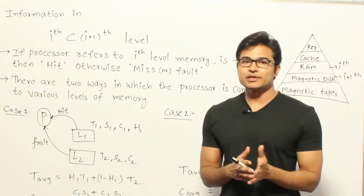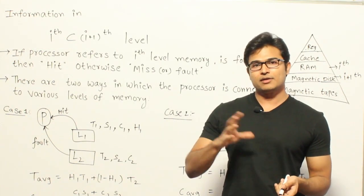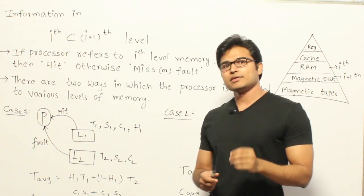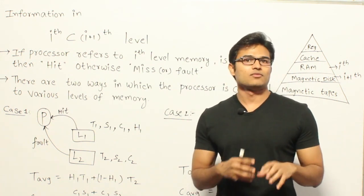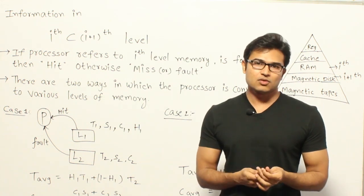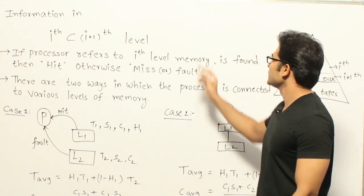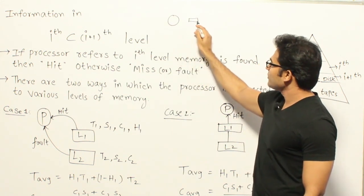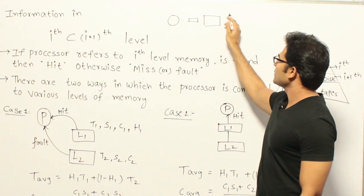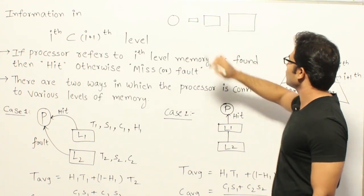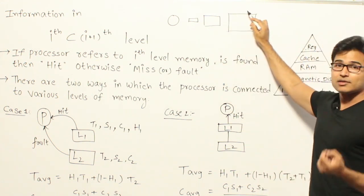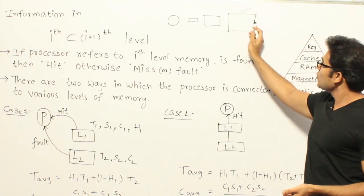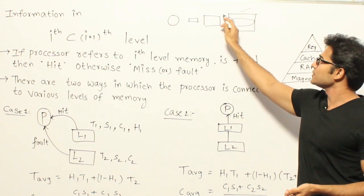When you have various types of memories, it doesn't mean that entire information is present in all the memories. Only a subset of information which is present in higher capacity memory will be present in lower capacity memory. If you have a CPU with cache, main memory will be bigger than cache, and secondary memory will be bigger than main memory. Therefore, entire information present in the computer system can be present in secondary memory, but only a part of this will be present in main memory.